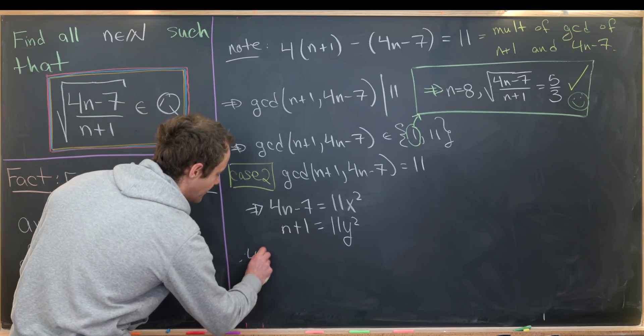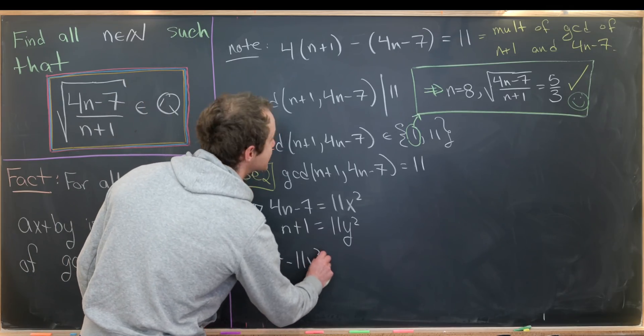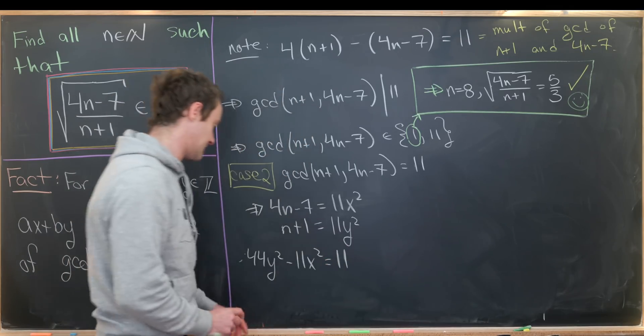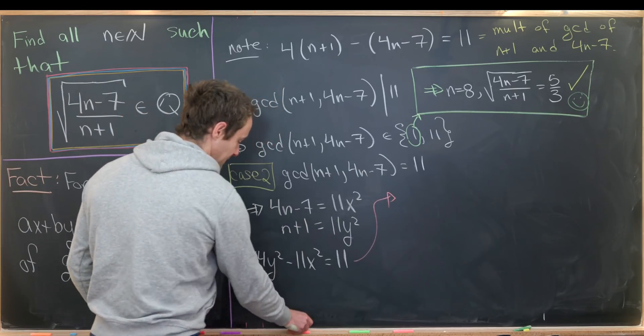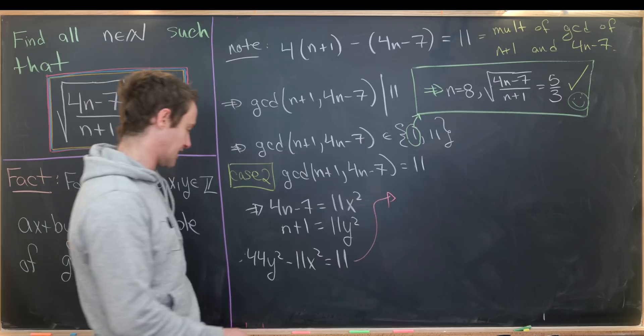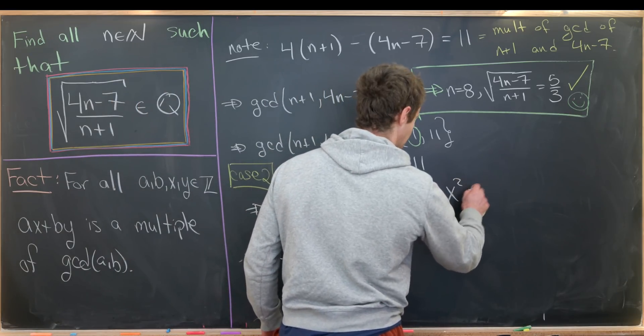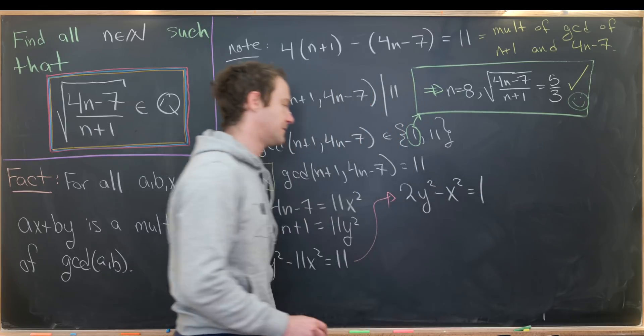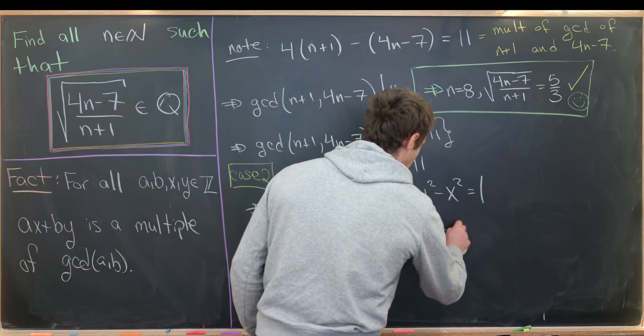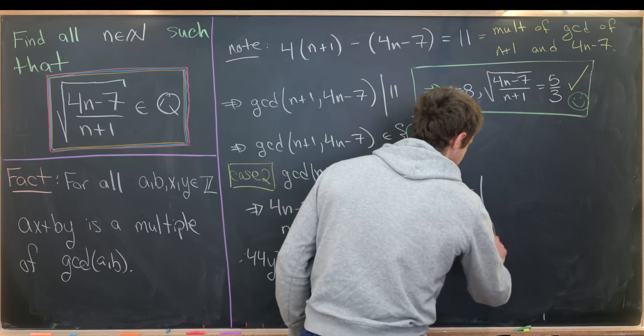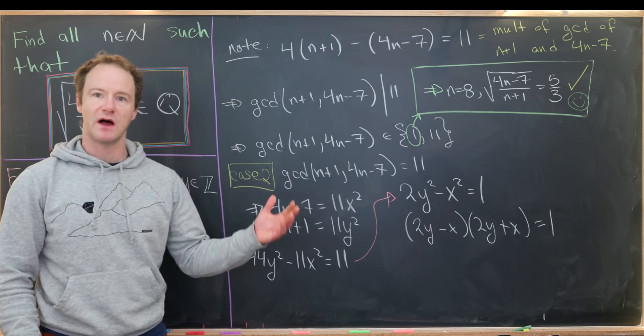Now we can divide this whole thing by 11, making some simplification. That'll give us something like 2y² - x² = 1. Now we can similarly factor as before, so that'll give us (2y-x)(2y+x) = 1.